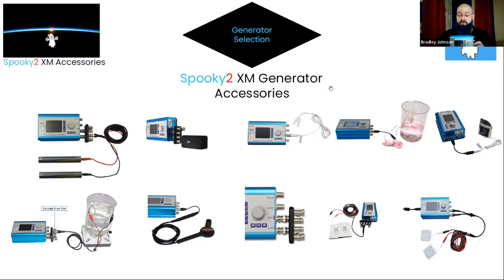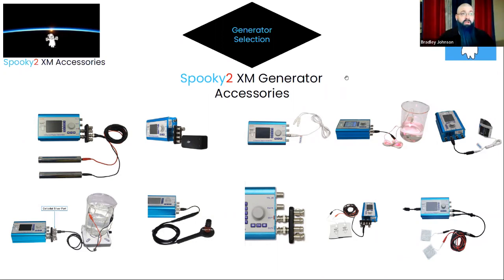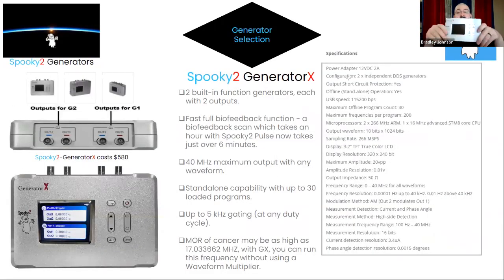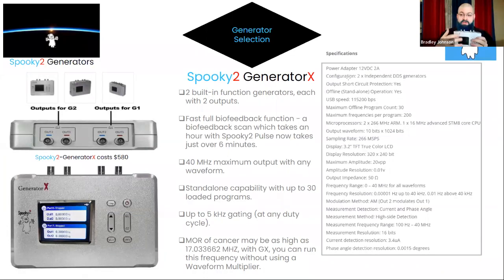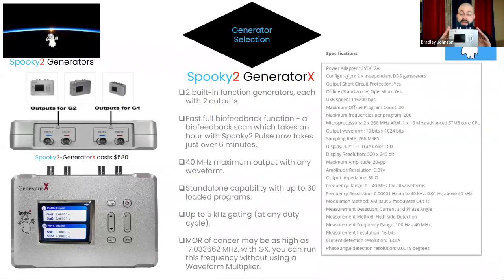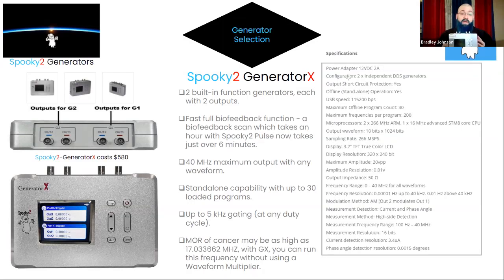The XM Generator is a tremendous feature generator for being as stable as it is at the $100 price point, though it is slightly limited in range compared to its older brother, the Gen X. The Generator X is an entirely different beast. Essentially, it has two XM generators built into one. In addition to the two-for-one option, you get a much more drastically improved biofeedback capability — which we'll get into shortly.